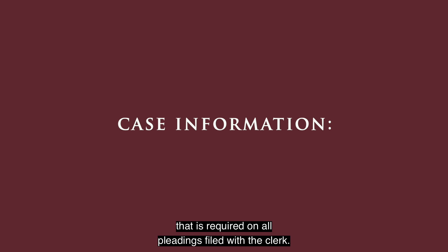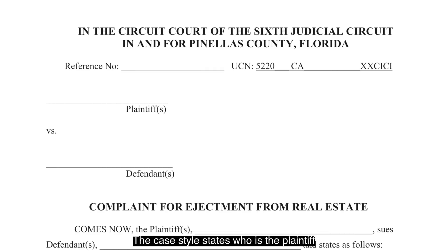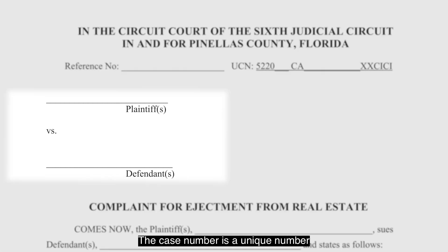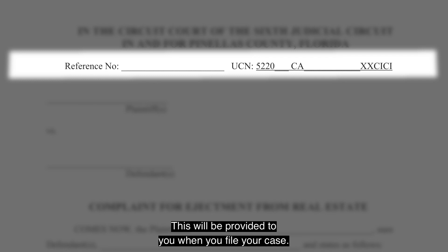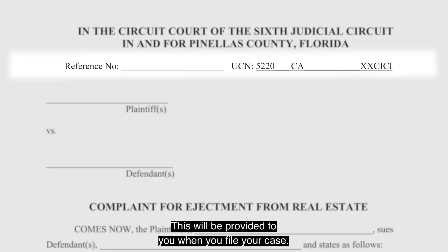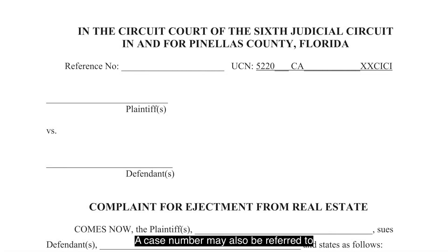Let's go over the information that is required on all pleadings filed with the Clerk. The case style states who is the plaintiff and who is the defendant in a lawsuit. The plaintiff is the party initiating this action, and the defendant is the party against whom the action is initiated. The case number is a unique number used to identify your case. Case numbers are assigned in sequential order in the court it is filed in — this will be provided to you when you file your case. A case number may also be referred to as a reference number or UCN number.